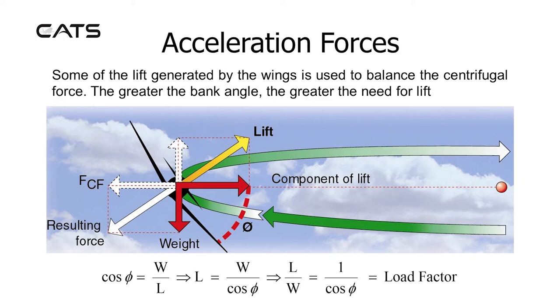Cosine of bank angle equals weight over lift. This can be arranged so that lift equals weight over cosine bank angle, and can be further rearranged so lift over weight equals one over cosine bank angle, which is equal to load factor. This shows the relationship that load factor is equal to one over cosine bank angle, to be more precise.